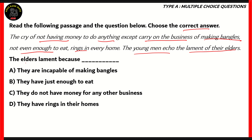The question is: the elders lament because of what situation? Options are: incapable of making bangles, just enough to eat, they do not have money for any other business, or they have rings in their homes. Option D says they have rings in their homes — while they do make rings and bangles, the word 'rings' here is actually a verb in the passage, meaning the lament 'rings in every home.' So option D is incorrect.